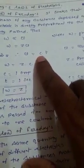When we remove this proportional sign, we use a constant. This constant we have taken as z here, this z is called electrochemical equivalent, where q is the quantity of electricity which is calculated by c current in ampere into time in second. So, the formula becomes W equal to z into c into t.